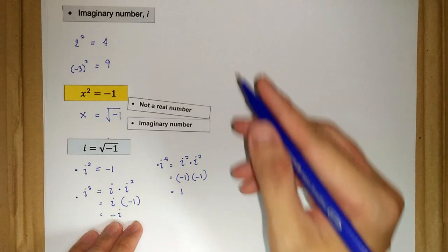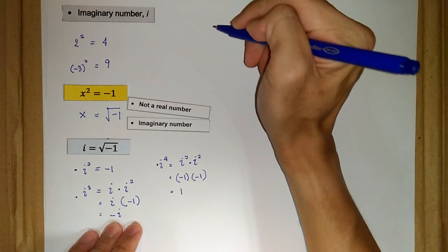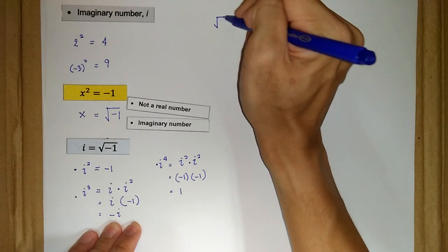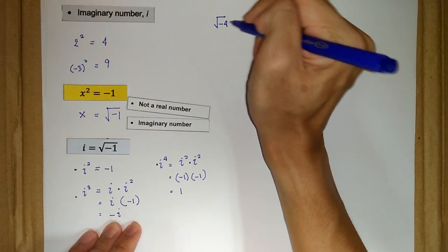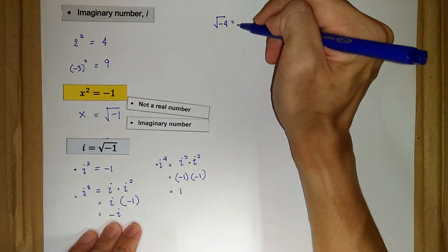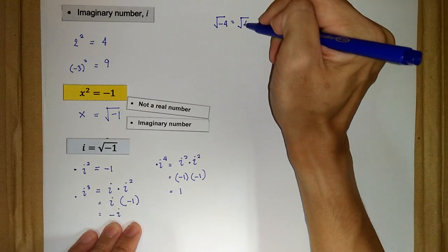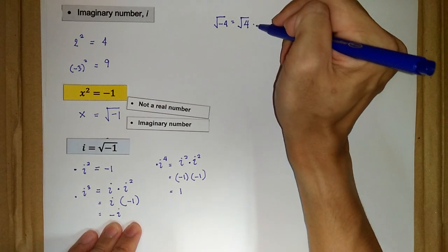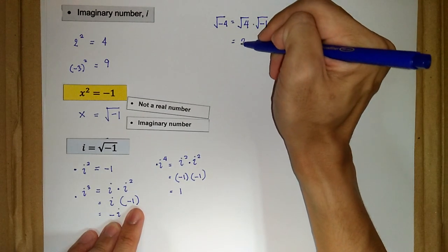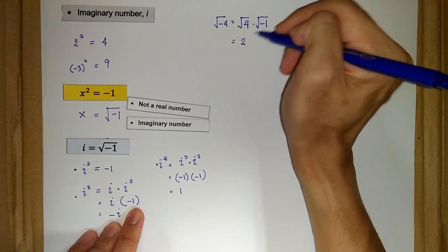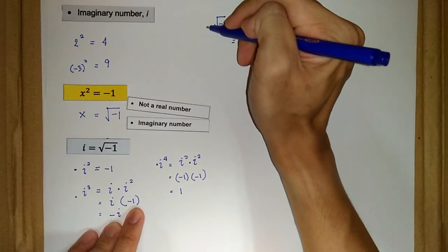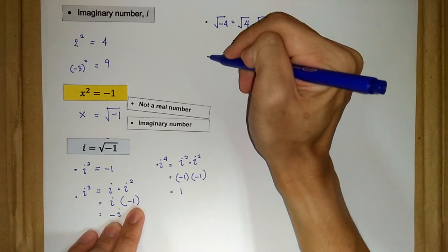We may also write, for example, the square root of negative 4. This is also an imaginary number. We may write it as the square root of 4 times the square root of negative 1. The square root of 4 is 2, and the square root of negative 1 is i, so the square root of negative 4 equals 2i.